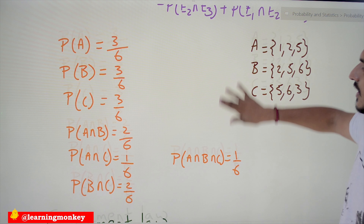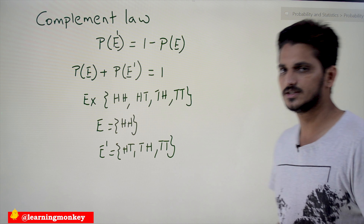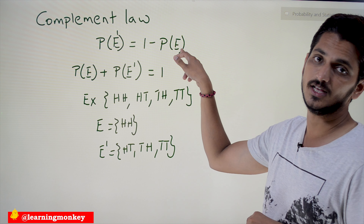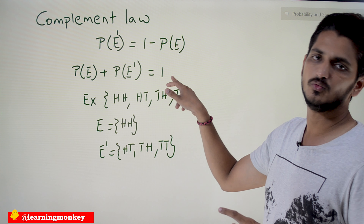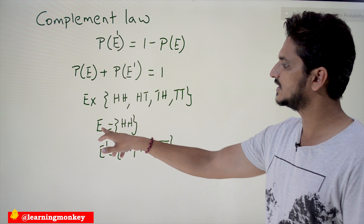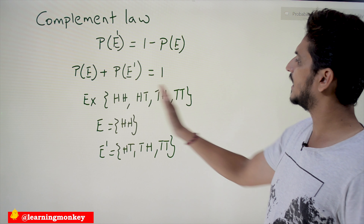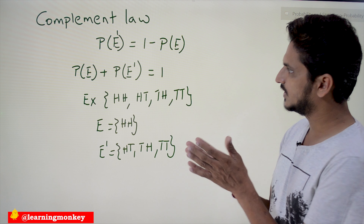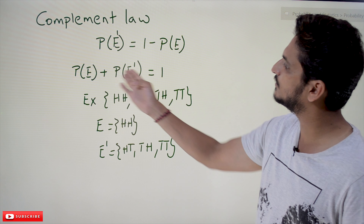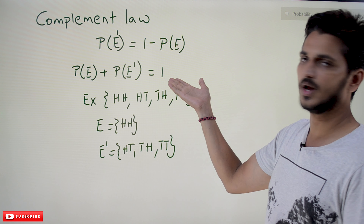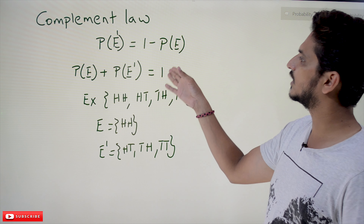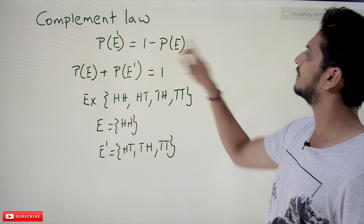Coming to the next law: the complement law. We already discussed complement events in the last class. The probability of E complement (E') is given as P(E') = 1 − P(E). So P(E) + P(E') = 1. Example: sample space for two coin tosses is {HH, HT, TH, TT}. If E = {HH}, then E' = {HT, TH, TT}. E and E' are disjoint, so P(E ∪ E') = P(E) + P(E') = P(sample space) = 1. Therefore P(E') = 1 − P(E).